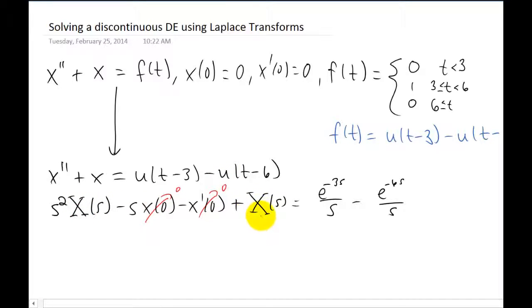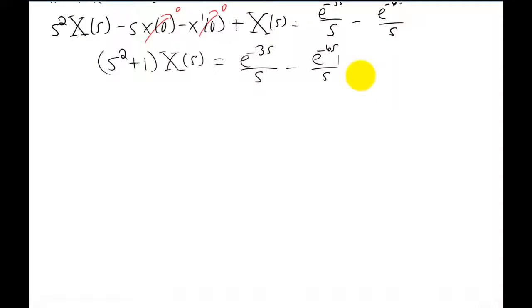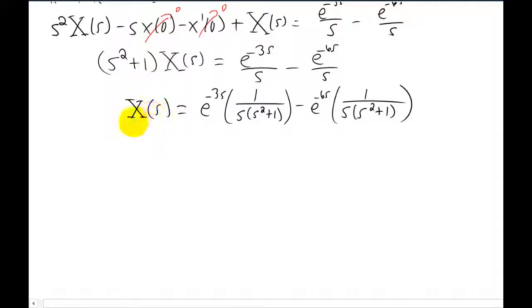Now the goal is to solve algebraically for the Laplace transform of x or capital X of s. I factored out a capital X of s from the left hand side and now I can divide by s squared plus one. So we've solved for the Laplace transform of our solution here and I actually wrote this in kind of a funny way to give you a better idea of what we're going to do with our partial fractions.